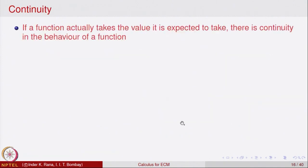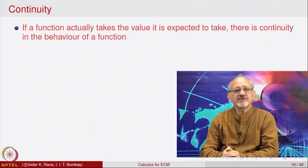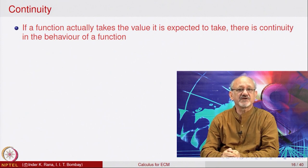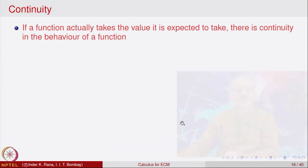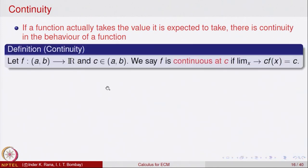Once we have understood the concept of limit of a function at a point — recall, the limit was the value that the function is expected to take by looking at its properties at nearby points — if a function actually takes the value it is expected to take, then we say there is continuity in the behavior of the function. This motivates our next concept. We define what is called continuity. Let f be a function from an interval (a, b) to R and c is a point in (a, b). For continuity, the function should be defined at that point.